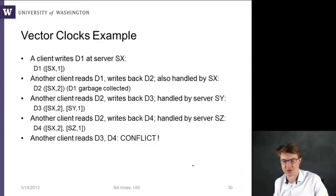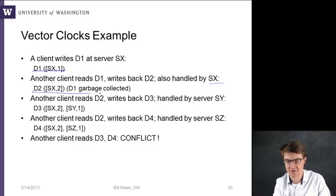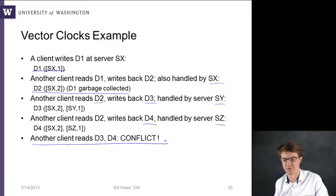So in the example, just to run through what we just saw, a client writes D1 to server SX and creates this value. Another client reads D1 and writes back D2, also handled by SX. And D1 was garbage collected. Then separate clients read D2 and write back D3 and D4 on two different servers, SY and SZ. And then another client reads D3 and D4 and notices and finds that there's a conflict. The system reports that there's a conflict to be handled.